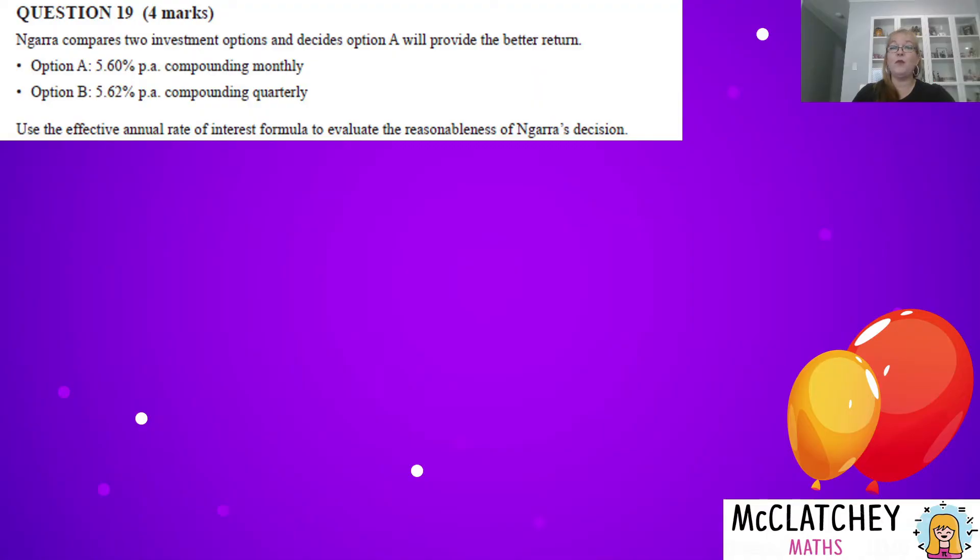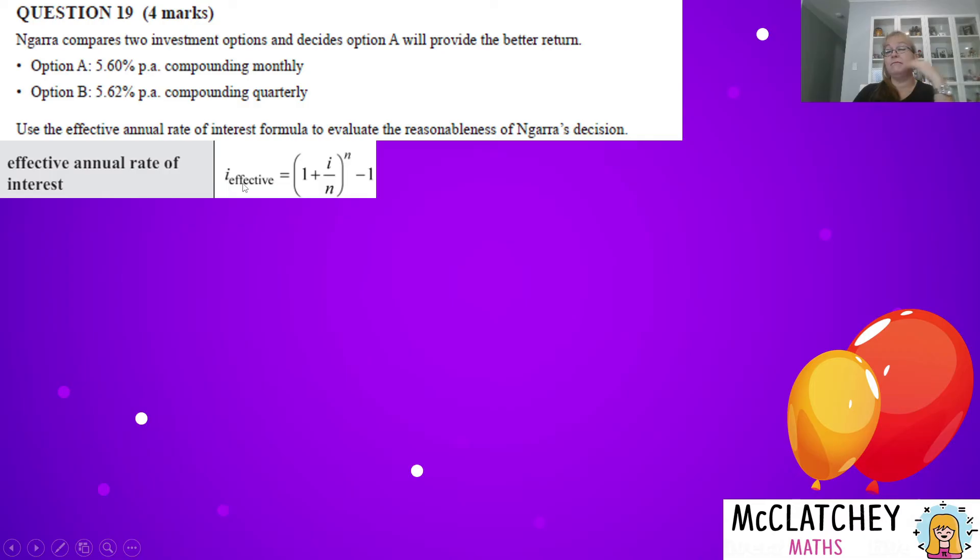Question 19, also worth four marks. Now I apologize if this is your name and I pronounce it incorrectly, but I'm going to pronounce it as Nara. Nara compares two investment options and decides that option A is going to give the better return. So we've got option A of 5.6% per annum compounded monthly and option B of 5.62% per annum compounded quarterly. So we need to use the effective annual rate of interest formula to evaluate how reasonable her decision is. Now in this particular case, they've told me what formula to use. I just need to be able to identify that from the formula sheet. Hello, it's written there - effective annual rate of interest - and they've told you which one to use. So if you use a different formula, that would not be good. So always read your question really carefully.